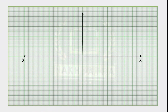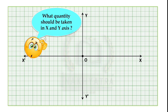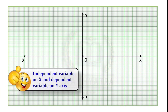What do you mean by a graph? A graph is defined as a pictorial representation of information — a two-dimensional drawing showing the relationship between dependent and independent variables. The independent variable is taken on the x-axis and the dependent variable on the y-axis.